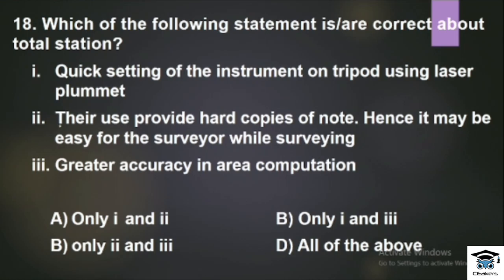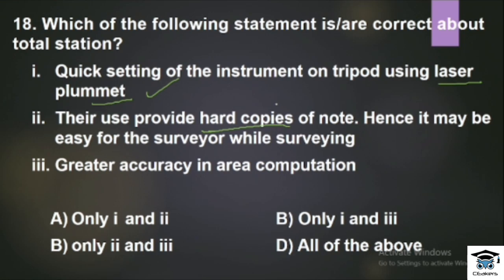Question: Which of the following statements is or are correct about total station? Statement 1: Quick setting of the instrument on tripod using laser plummet — correct. Statement 2: Their use provides hard copies of data — wrong, because total station saves soft copies. Statement 3: Greater accuracy in area computation — correct. So the answer is statements 1 and 3 are correct, option B.